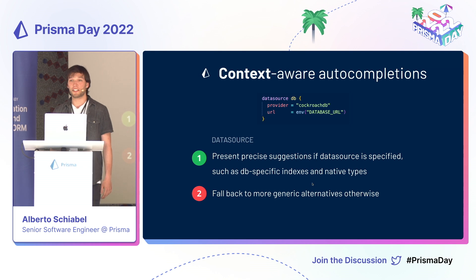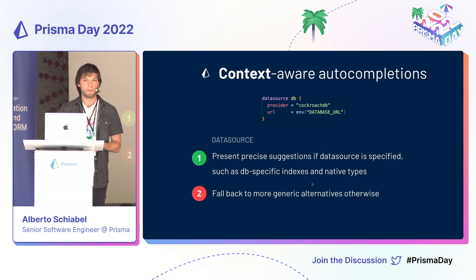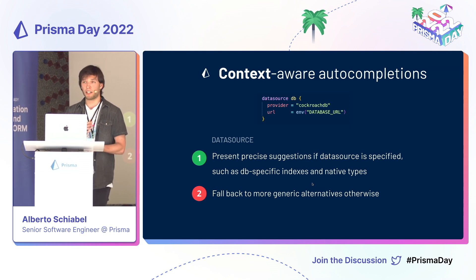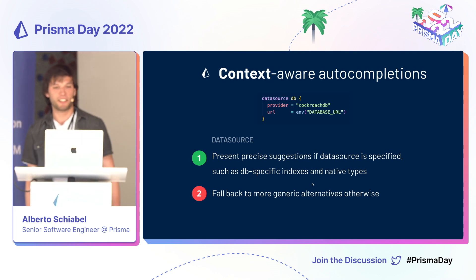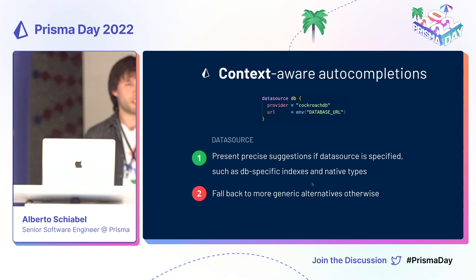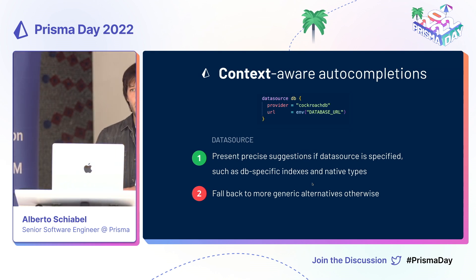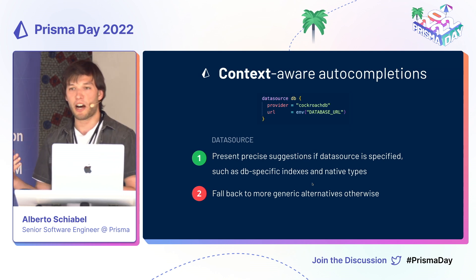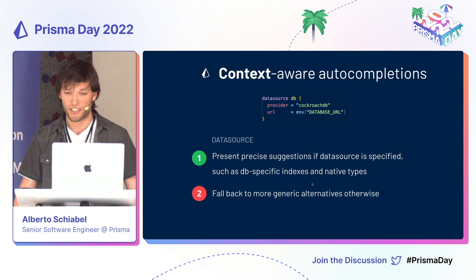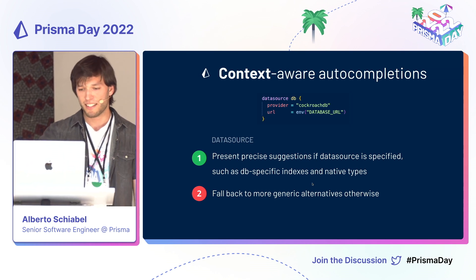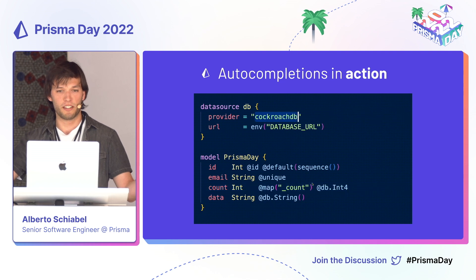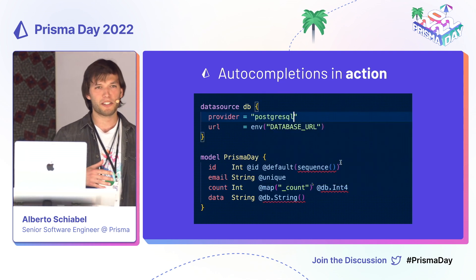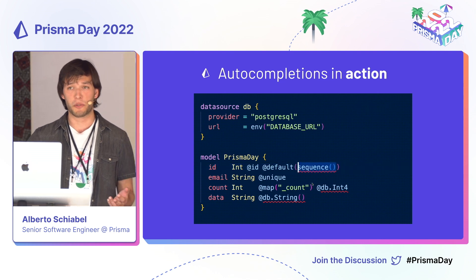We also support context-aware autocompletions. We try to provide the best autocompletions possible depending on how much you fill the schema and how many of our optional fields you actually fill. For instance, if you select a data source provider, you might get more accurate autocompletions than if you don't. Let's take a look at this example here — we have a Postgres provider, which is remarkably similar to the CockroachDB provider in terms of the interface exposed.